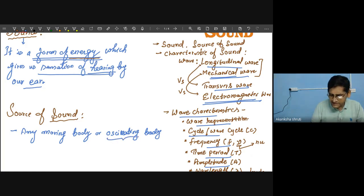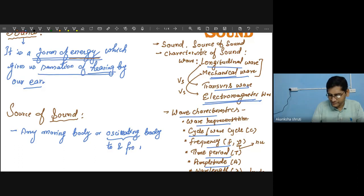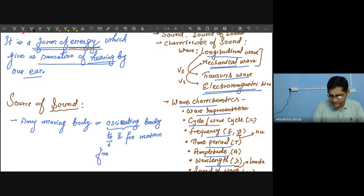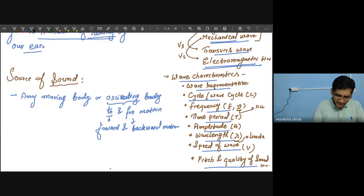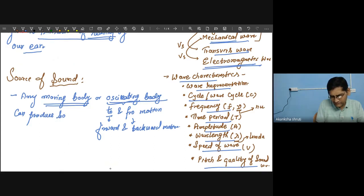Any moving body which is able to transfer its energy to the medium can produce sound. This is especially called an oscillating body — oscillating means nothing but moving forward and backward again and again, which is to-and-fro motion. To means forward and fro means backward. So any moving or oscillating body is the source of sound.